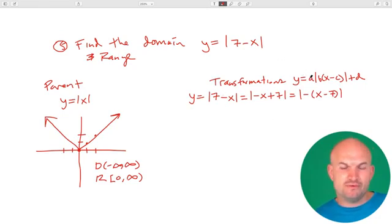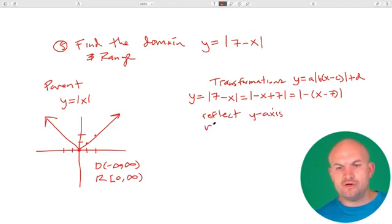One thing I forgot to mention, when A is negative, that's reflected about the X-axis. So when B is negative, that's going to be a reflection about the Y-axis. So let's just write down all the transformations. We're reflecting the Y-axis, and we're going to the right 7 units.